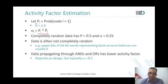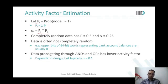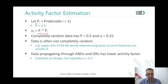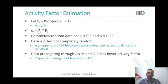If there is completely random data, any node can be 0 or 1. For completely random data the probability of a node being 1 is 0.5. So the activity factor alpha in completely random data is 0.5 times 0.5, which equals 0.25.